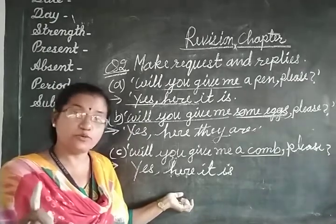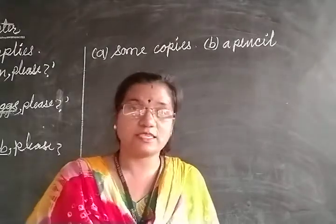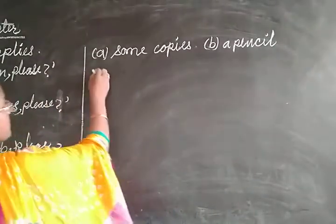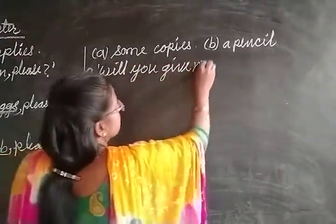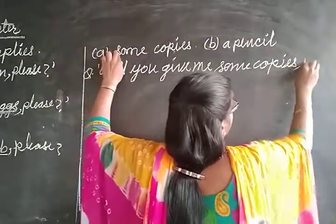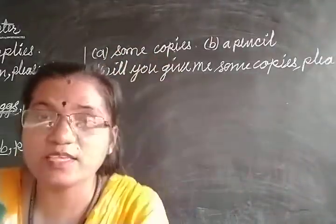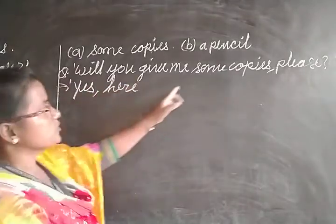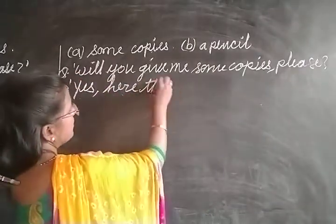Let us do one or two questions from our book. Here we have to ask for some copies. So let us make the request: 'Will you give me some copies, please?' Now the reply: more than one copy, so we use the pronoun 'they.' Reply: 'Yes, here they are.' Next question: a pencil. Let us make the request: 'Will you give me a pencil, please?' The reply: 'Yes, here it is.' — singular, so 'it is.'